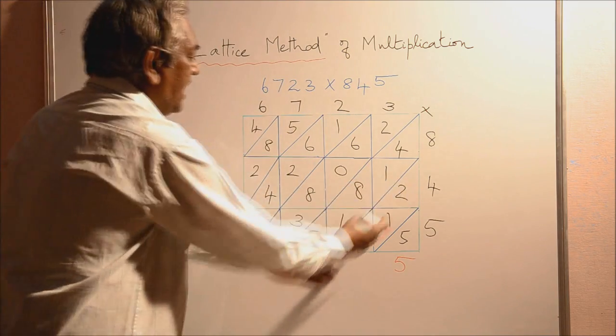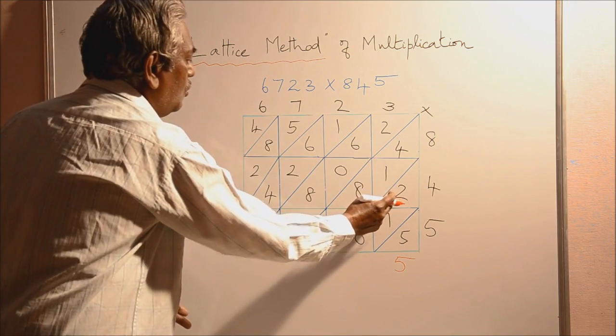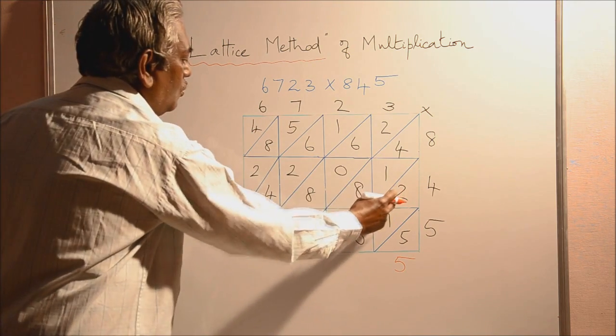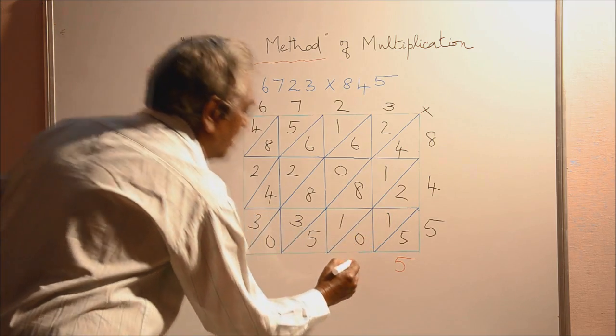And in this diagonal, we get 2, 1, 0. Add them. 2 plus 1, 3 plus 0, 3.